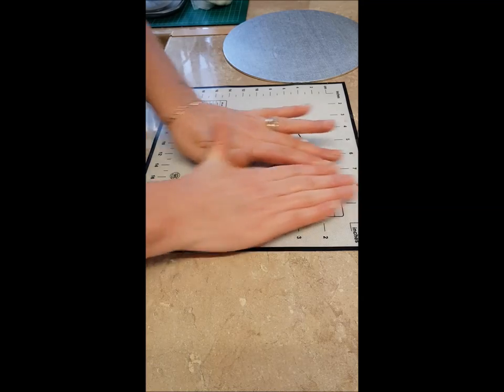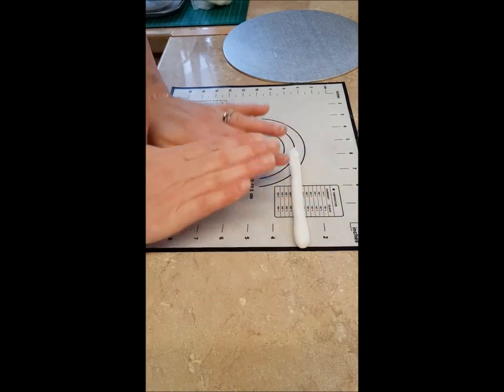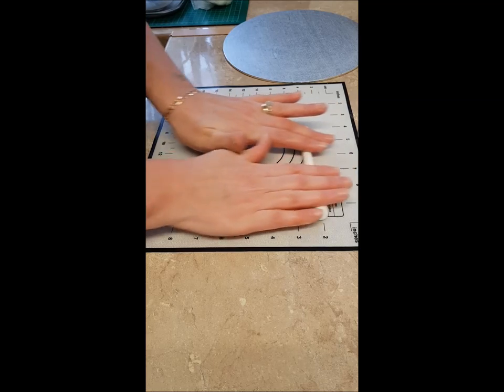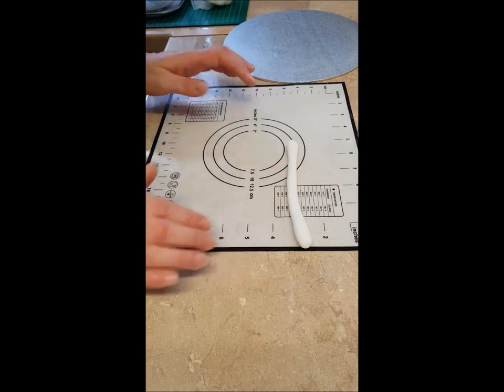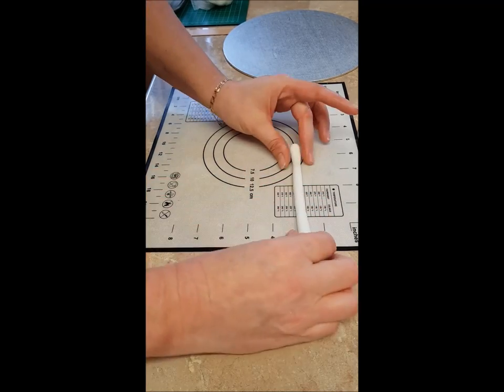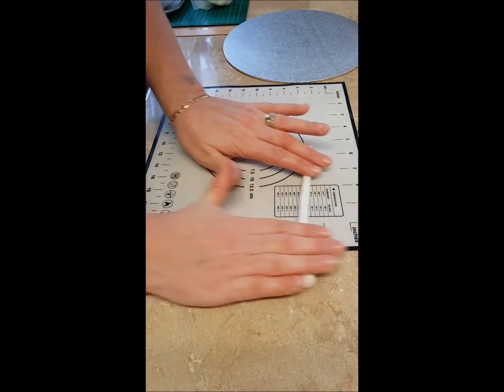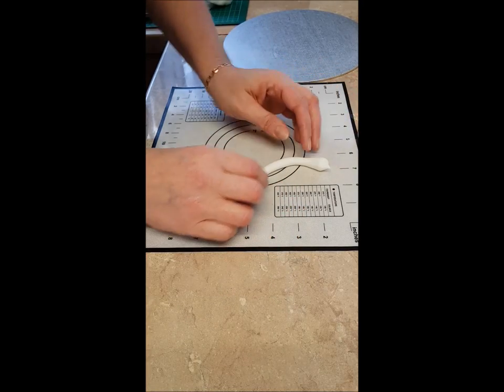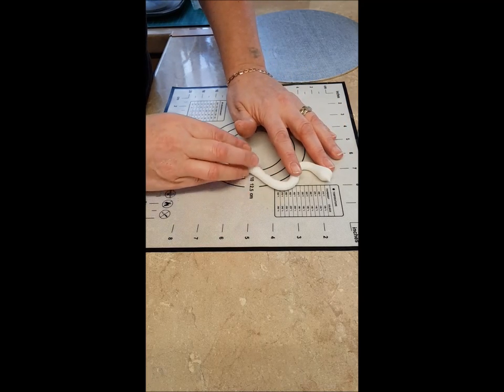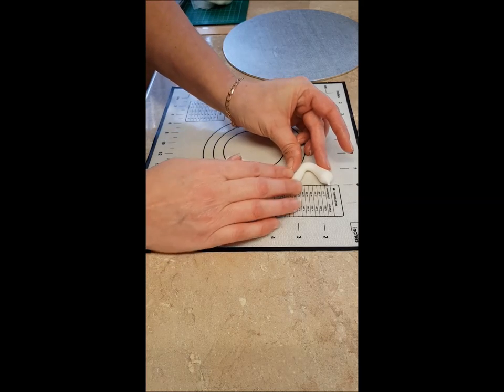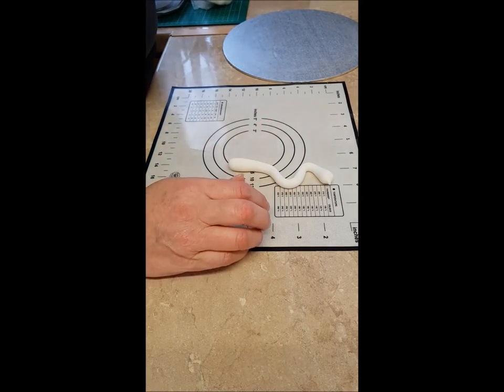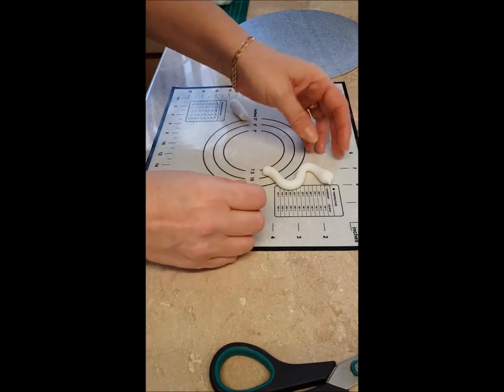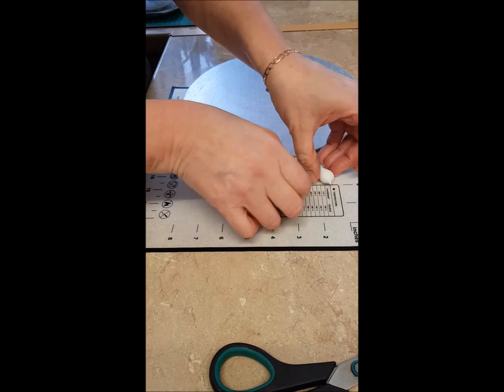I'm wanting it quite thin, so I'm just rolling it and pulling it with my fingers as I'm rolling it. Then you want to put it in like an S shape, sort of like that, and just cut off the excess bits that you don't need. Set that aside on something to dry, ideally overnight.